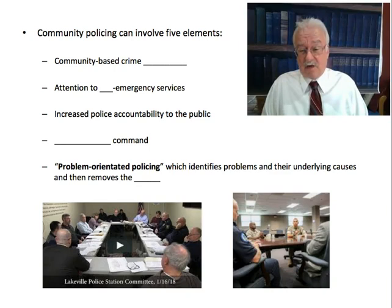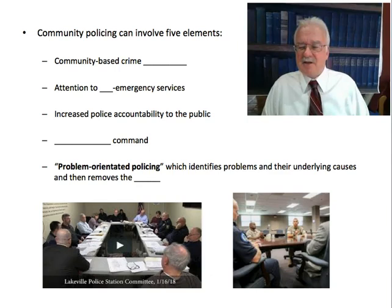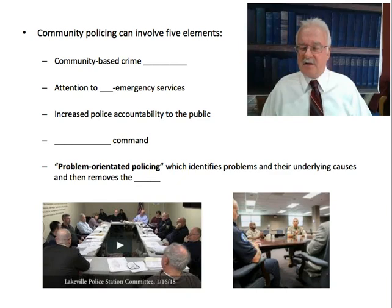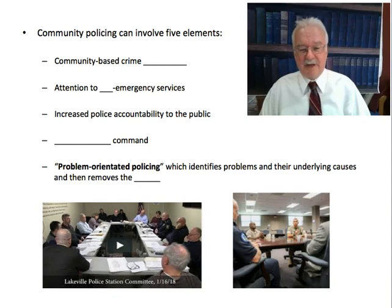The final element of community policing is problem-oriented policing, where police in partnership with the community identify problems and their underlying causes that promote crime, and then remove those causes. For example, in a domestic violence situation where a husband gets drunk every Friday and beats his wife, instead of just responding week after week, police identify underlying causes — maybe the husband's an alcoholic needing counseling — and get that intervention to remove the underlying problem and solve it permanently.